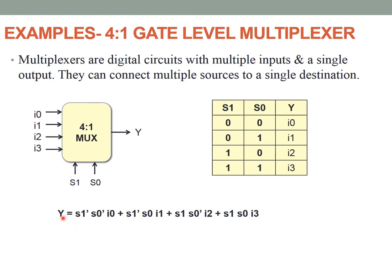The expression is quite simple. To write an SOP, we consider every output. The first case, 0,0, is represented as S1_bar · S0_bar · I0. The case 0,1 gives S1_bar · S0 · I1. The case 1,0 gives S1 · S0_bar · I2. And the last case 1,1 gives S1 · S0 · I3. This is the Boolean expression for the 4-to-1 multiplexer.